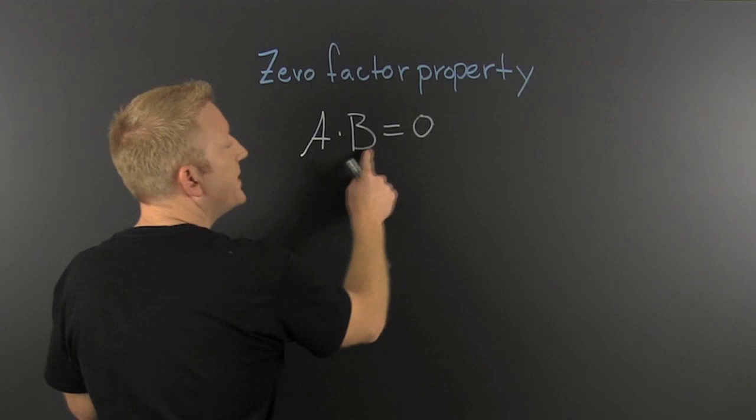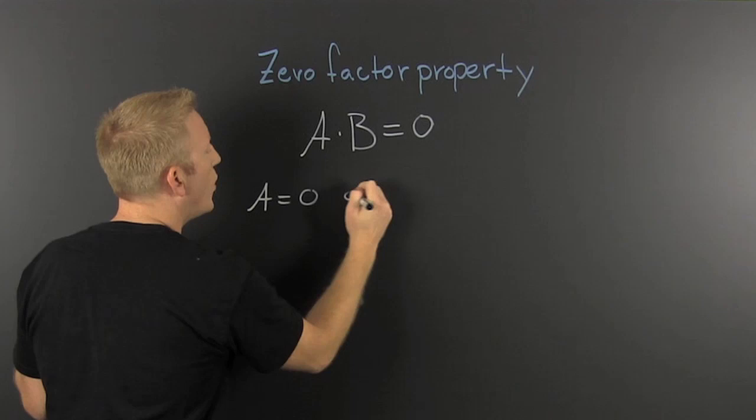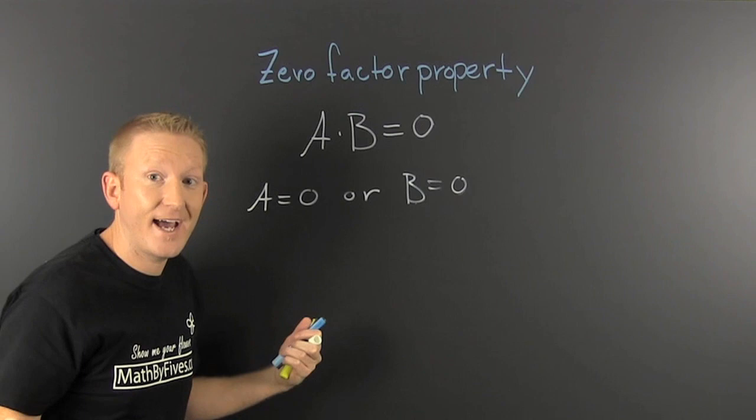We have the product of two things and that's equal to zero. So what does that mean? That says that A is equal to zero or B is equal to zero. And that's the zero factor property.